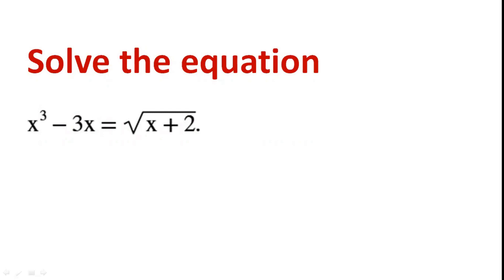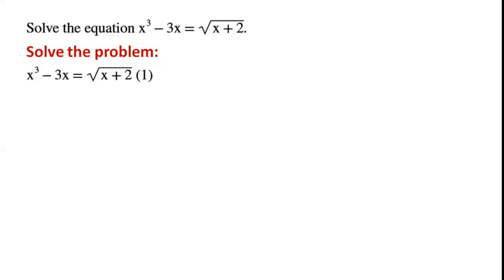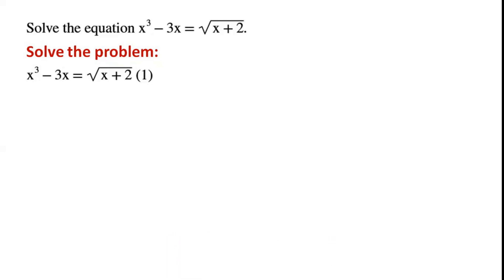Solve the equation x cubed minus 3x equals root of x plus 2. Usually we solve an equation like this by removing the radical from the right hand side. If we square both sides of the equation, then we have a polynomial equation of degree 6, which is not easy to solve. So we'll take an alternative approach to solve this equation.